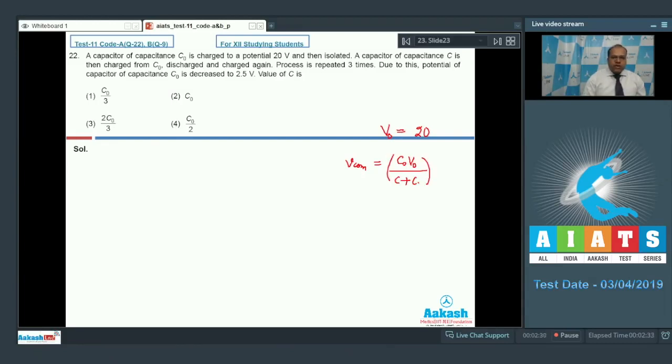After this, the charge comes on the capacitor C0 that is Q2 is V common into C0. So C0 into V common that is C0V0 divided by C plus C0. This is C0. So again, when the capacitor C is connected to this, the common potential in this case,